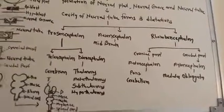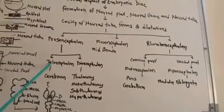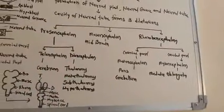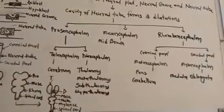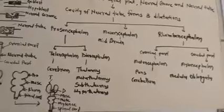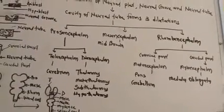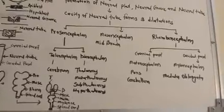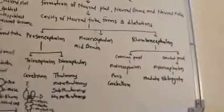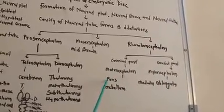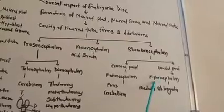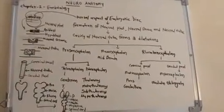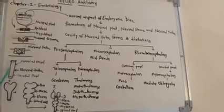Now, which parts of the brain are developed from all these parts? From the telencephalon there is a formation of the cerebrum. From the diencephalon, which converges different parts like the thalamus, metathalamus, subthalamus, hypothalamus, and basal nuclei. The mesencephalon we know as the midbrain. The rhombencephalon is divided into the metencephalon and myelencephalon. From the metencephalon there is the formation of the pons and the cerebellum. And from the myelencephalon there is the formation of the medulla oblongata. So here you can see that all parts of the nervous system are developed from this tiny neural tube.